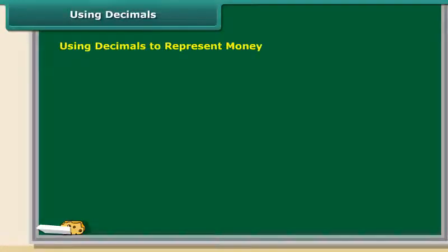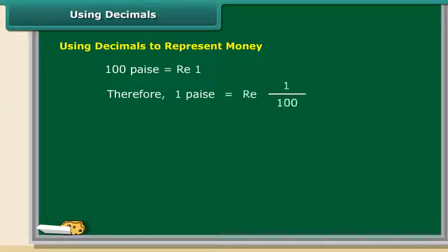Money can be represented using decimal notation. It is common knowledge that 100 paise are equal to 1 rupee. It means 1 paise is equal to one hundredth of a rupee.